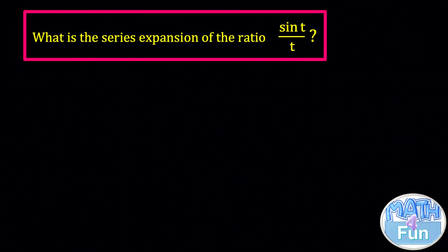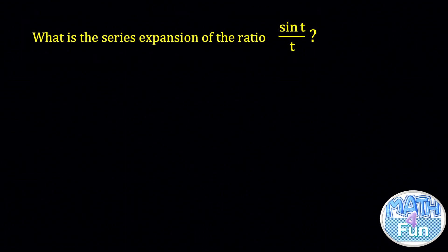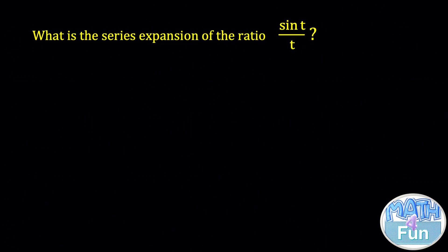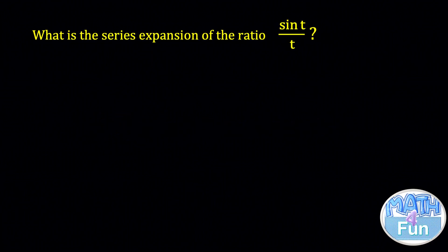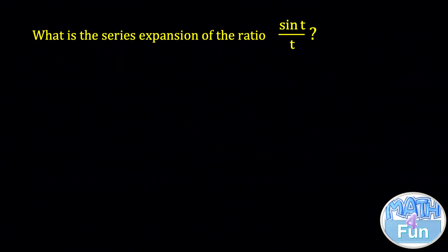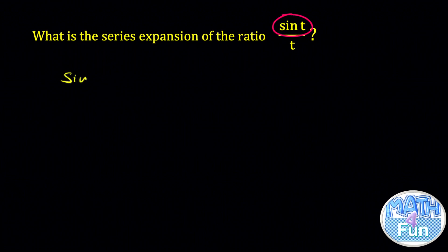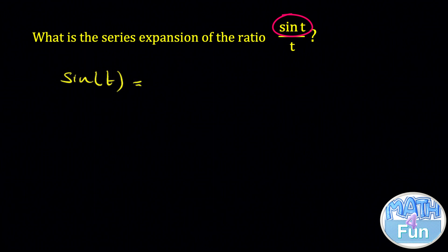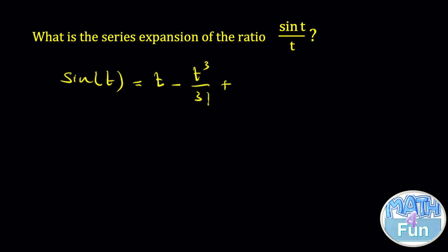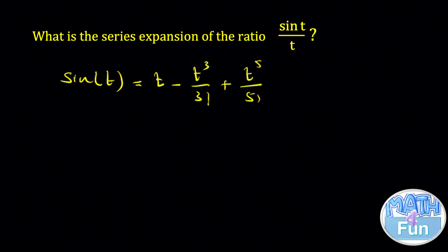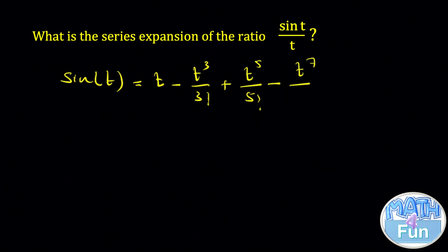What is the series expansion of the ratio sine t over t around t equal to 0? The series expansion of sine t over t around t equal to 0 is known as the Maclaurin series — you heard that in calculus. Starting with the Taylor series expansion of sine t around t equal to 0, we can write sine of t is equal to t minus t to the power 3 over 3 factorial plus t to the power 5 over 5 factorial minus t to the power 7 over 7 factorial plus and so on.